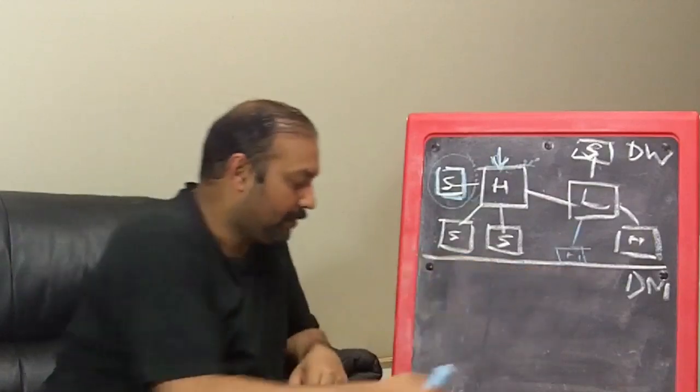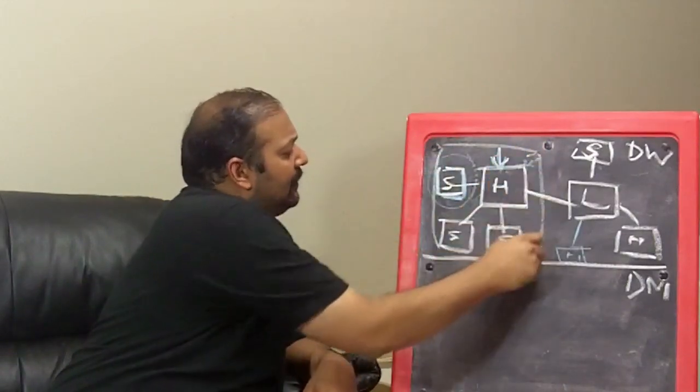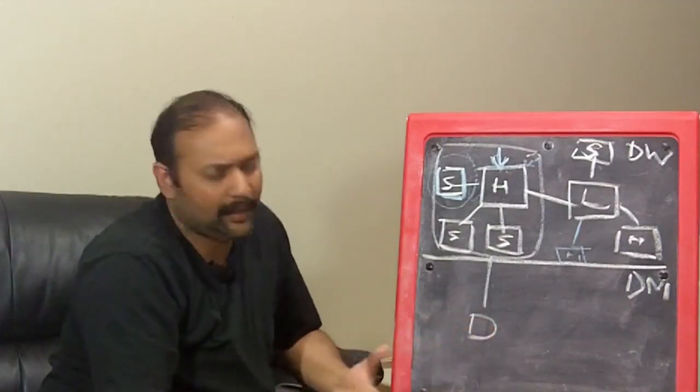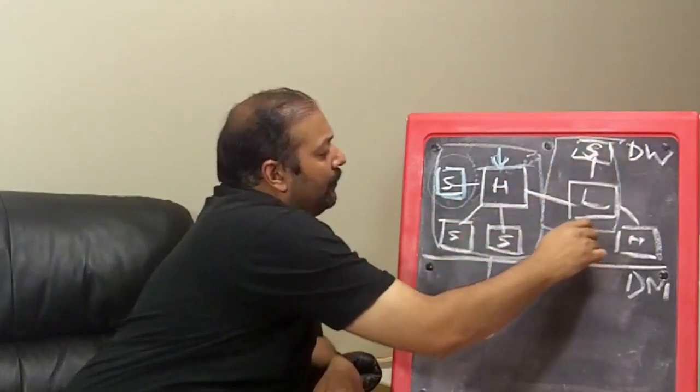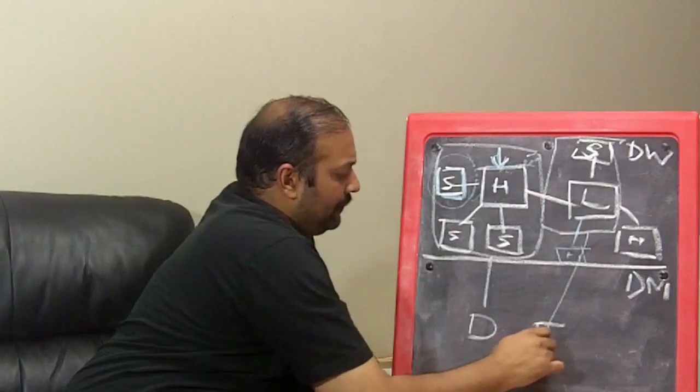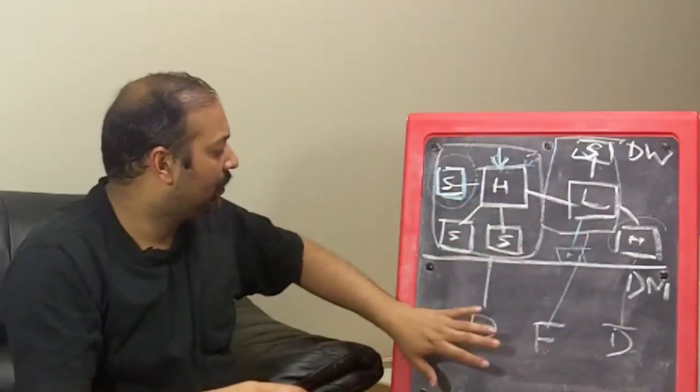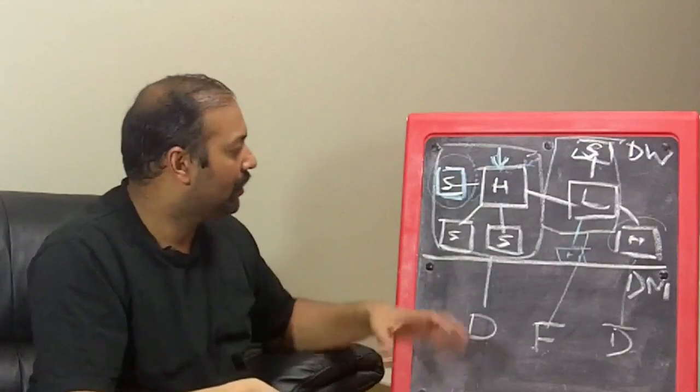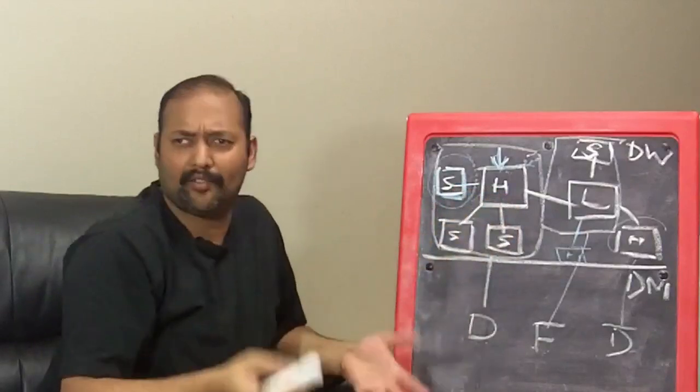Now, from here, let's go to the data mart. So, the hubs and its satellites, this loosely defines a, it looks very much like a dimension in a star schema. The links and its satellites, these look very much like a fact. And other hubs, they'll make more dimensions. From the data vault, because you have a pattern-based architecture, these facts and dimensions, they have no business rules. They're raw facts and dimensions.